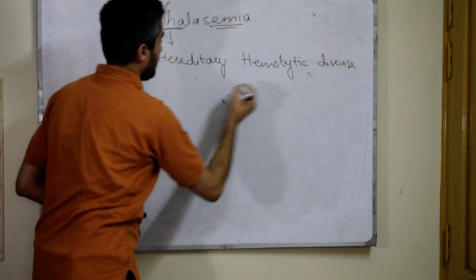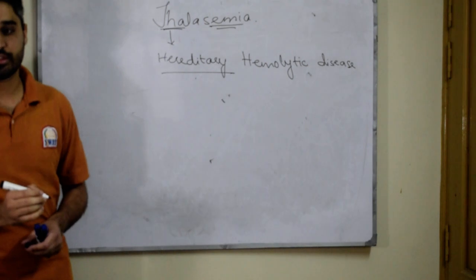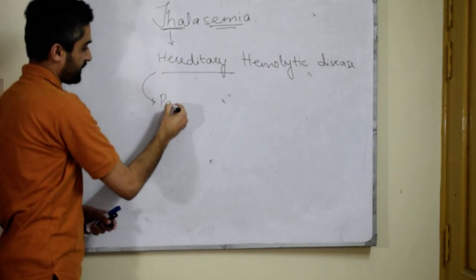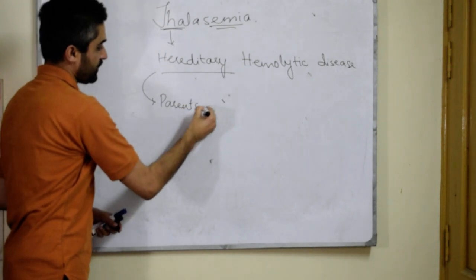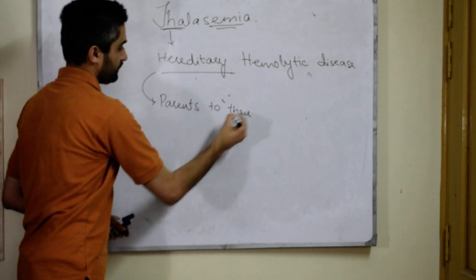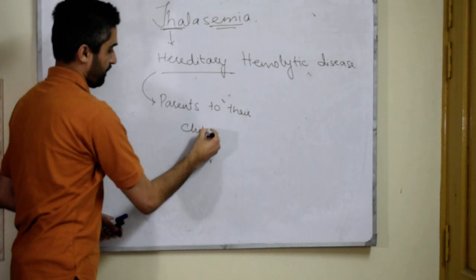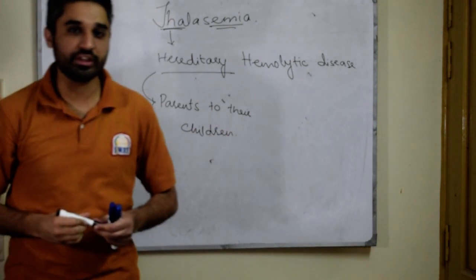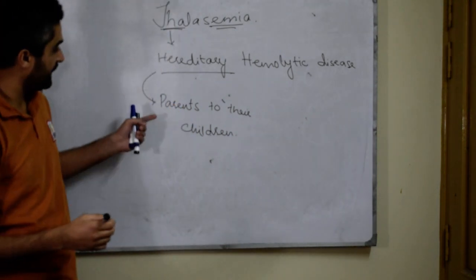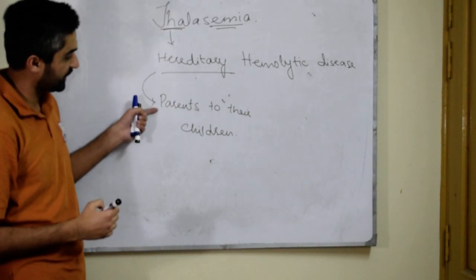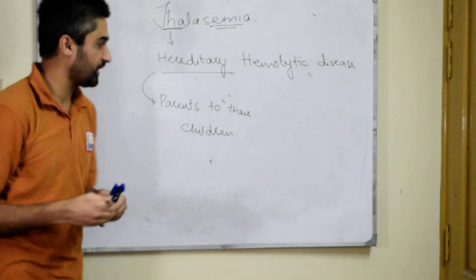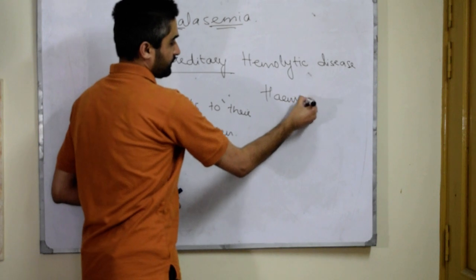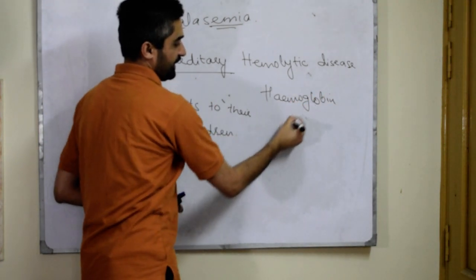What do we mean by hereditary? It means that this disease keeps on being transferred from parents to offspring — from parents to their children. So it is a hereditary disease, and the disease keeps on being transferred from parents to their children.